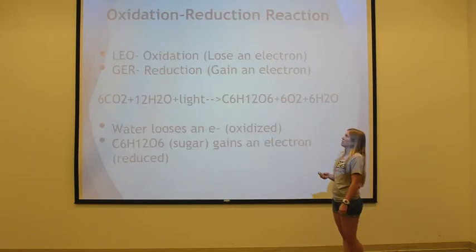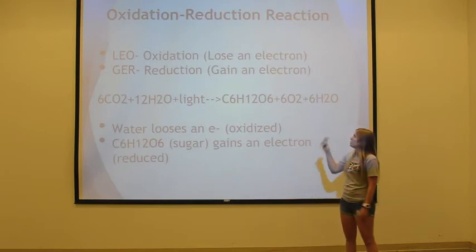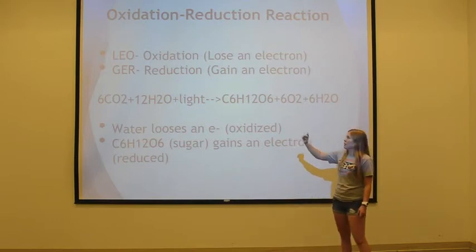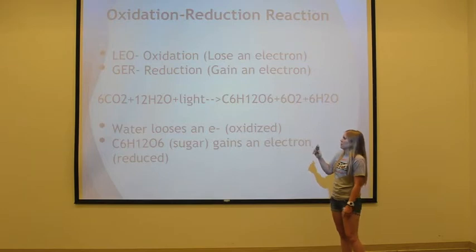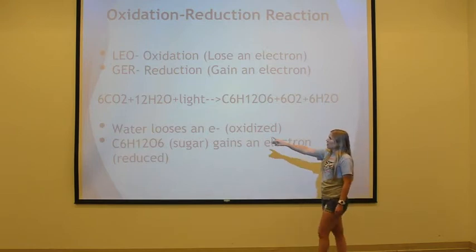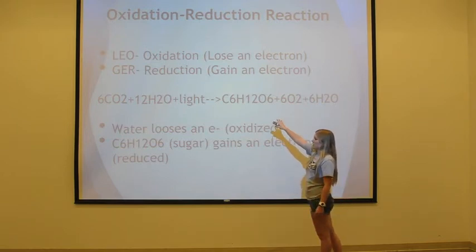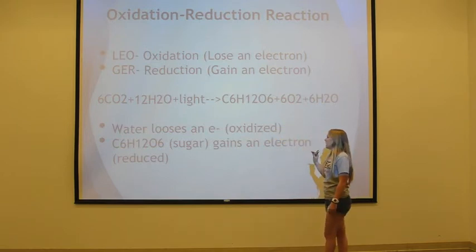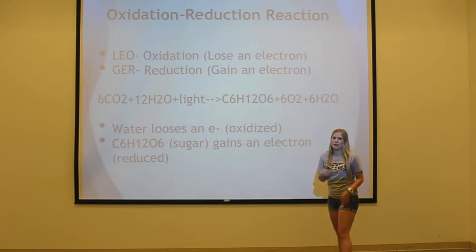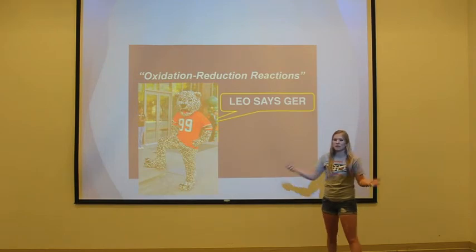To relate back to oxidation-reduction reactions: LEO is oxidation, which means lose an electron, and GER is reduction, which means gain an electron. Looking back at the equation for photosynthesis, we can see the water in the beginning loses an electron, which means it's oxidized. And the sugar, which is C6H12O6, gains an electron — therefore it's reduced. That's how it's related back to photosynthesis. And so we all know that LEO says GER.